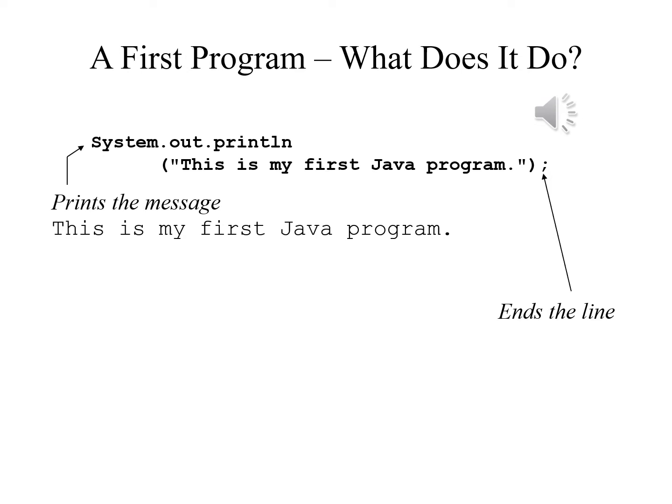Let's take a look at the one executable statement in this first program. System.out.println — for now we will take all of that as one unit. After that you'll see an open parenthesis, and then inside quotation marks: 'this is my first Java program.' At the end you'll see a closed quotation mark, a closed parenthesis, and a semicolon. We always use double quotation marks, not single quotation marks as in Python. All statements need to be terminated with a semicolon, and the program will print: 'this is my first Java program.'